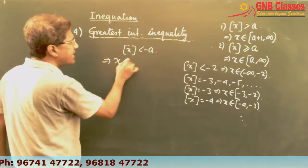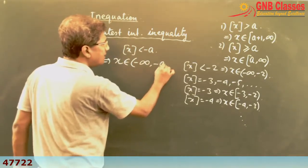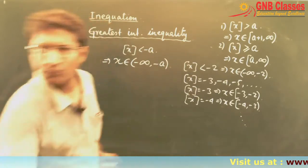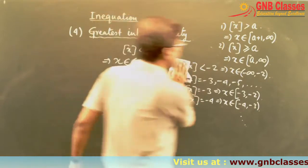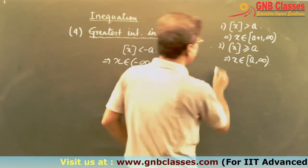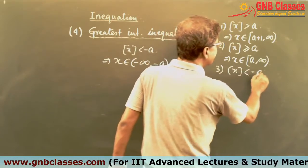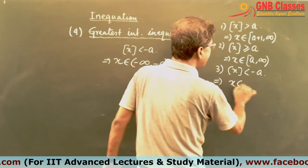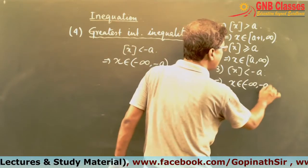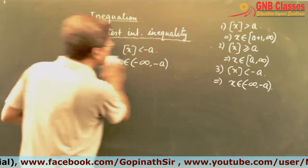We can directly write this as x belongs to (−∞, −a). So the third formula is: when ⌊x⌋ < −a, then x belongs to (−∞, −a).